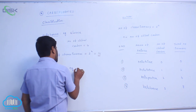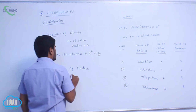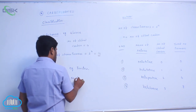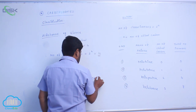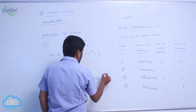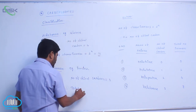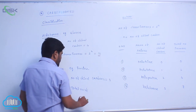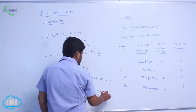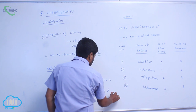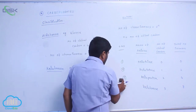For ketohexose, the example is fructose. The number of chiral carbons equals 3, so the total number of isomers equals 2 to the power 3, giving 8 isomers. This is about aldoses and ketoses.